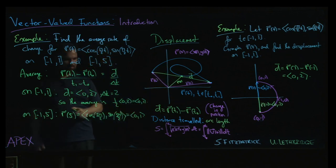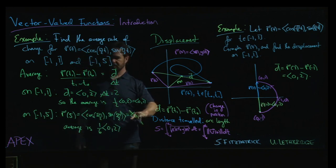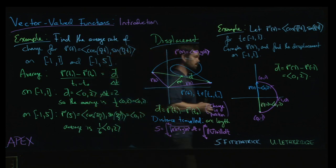And so this time, our average is going to be, well, the delta t changes. Now it's 5 minus -1. So it's 1/6 times the displacement, which is still (0,2), because the final point is the same and the initial point is the same. So we have the same displacement but over a longer time interval. This time the average rate of change is less than it was before.